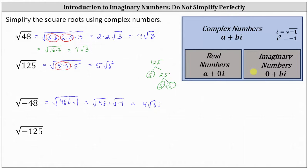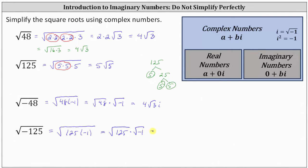For the last example, we have the square root of negative 125. Let's write this as the square root of 125 times negative one, which is equal to the square root of 125 times the square root of negative one. We know the square root of 125 is equal to 5 square root of 5, and the square root of negative one is equal to i. Therefore, the square root of negative 125 is equal to 5 square root of 5 times i.